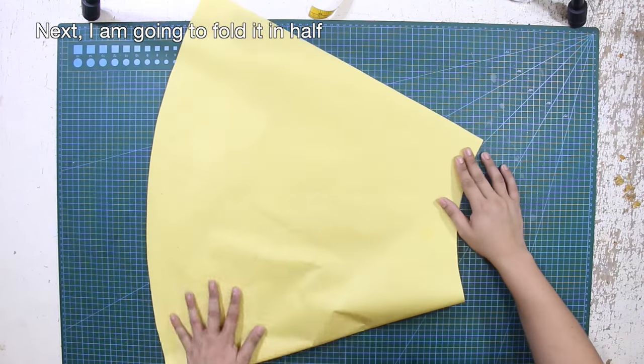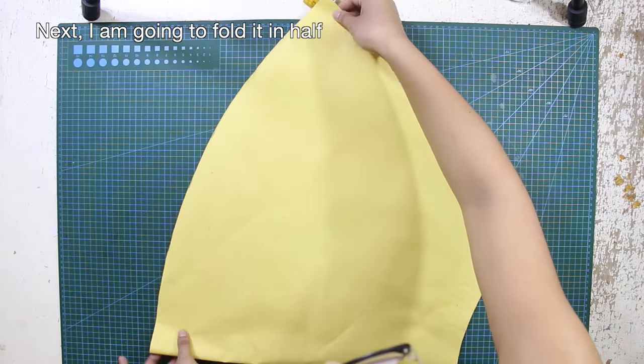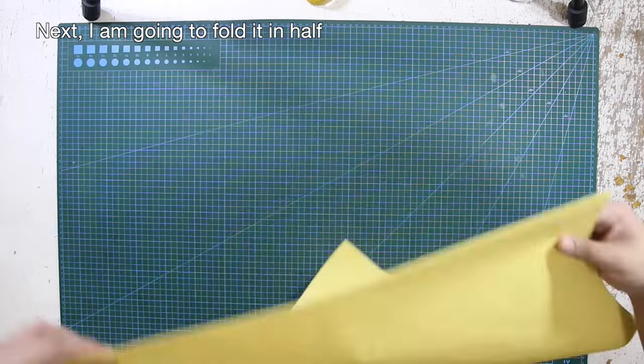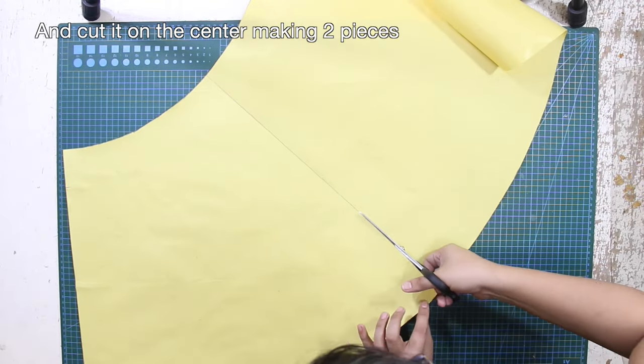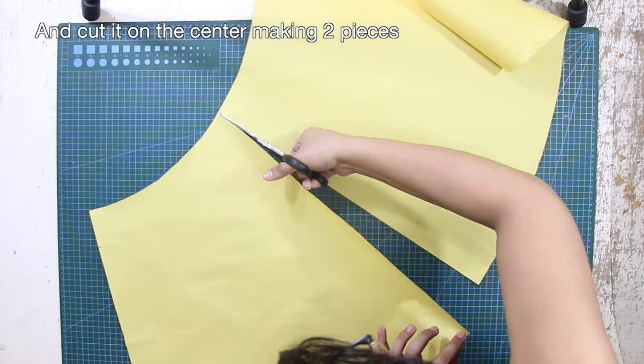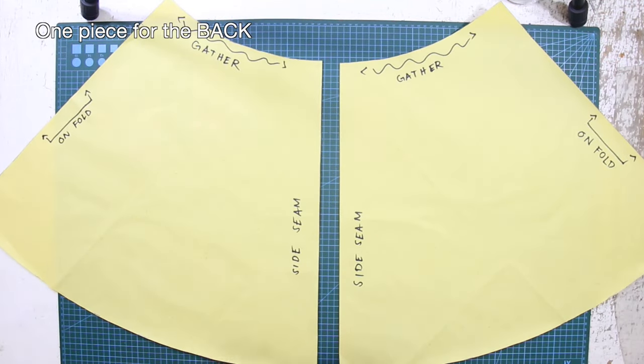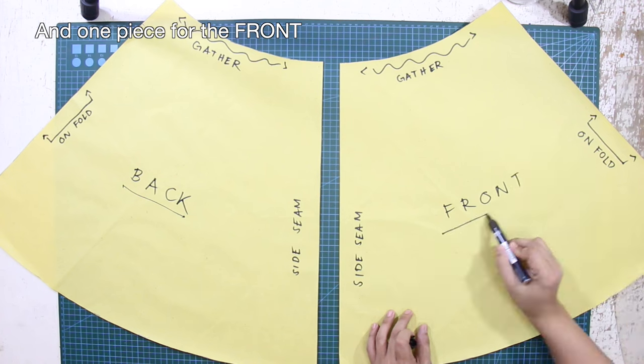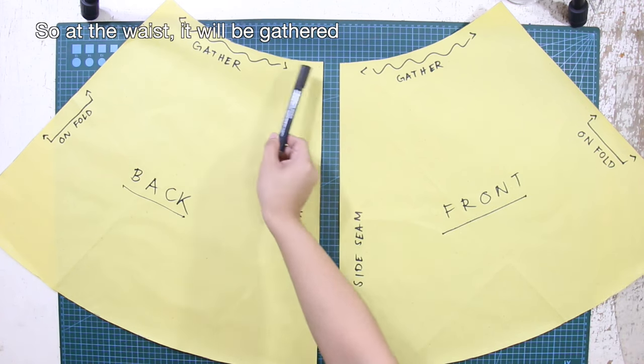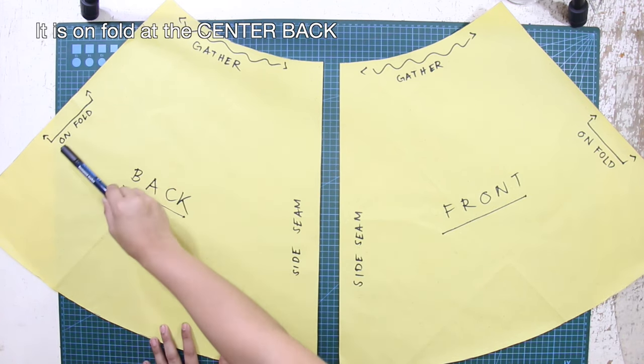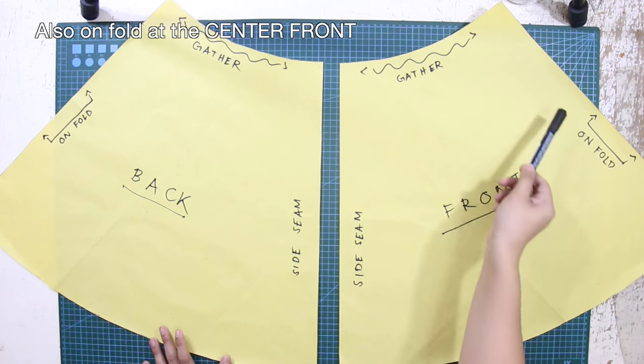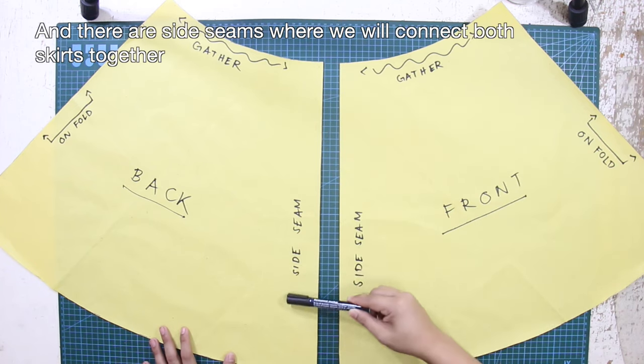Next I'm going to fold it in half and cut it on the center making two pieces, one piece for the back and one piece for the front. At the waist it will be gathered. Unfold at the center back, also unfold at the center front, and there are side seams where we will connect both skirts together.